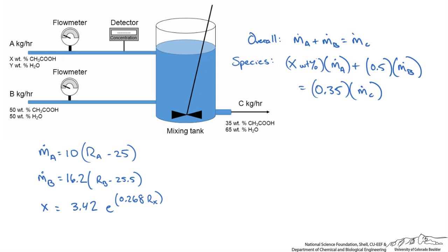We can use our two material balances to cross out MC. We will be left with x, MA, and MB. We can get x in terms of RX which is our reading on the detector. Then we can get A in terms of RA which is the reading on the flow meter.